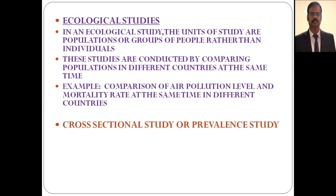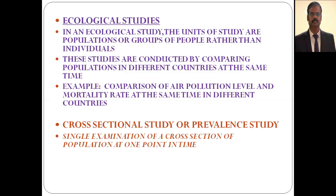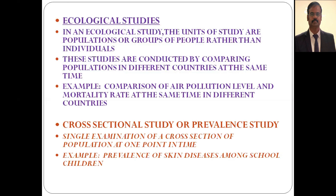Cross-sectional studies are also called prevalence studies. Some textbooks classify them under descriptive studies, others under analytical studies. If a comparison group is present, it can be classified as analytical. A cross-sectional study is a single examination of a cross-section of a population at one point in time — exposure and outcome are measured simultaneously. An example is the prevalence of skin diseases among school children. Prevalence refers to the number of existing cases at a point in time, known as point prevalence.